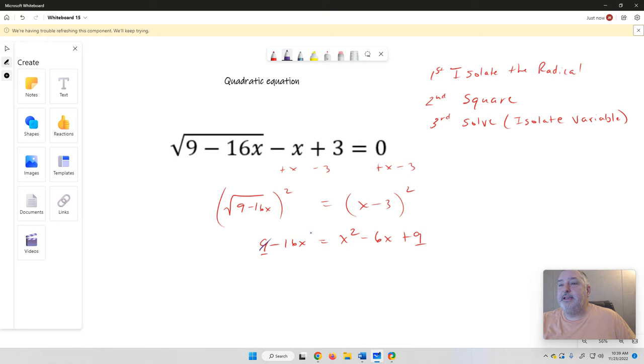So if I subtract 9, they cancel and equal 0. So I'm going to add 16x to each side. Cancels, gives me 0 equals x squared plus 10x and then nothing.